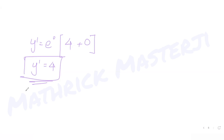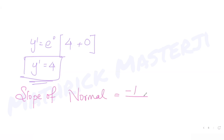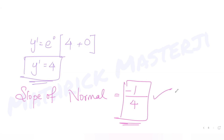Since the normal and tangent are perpendicular to each other, their slopes are negative reciprocals. So the slope of the normal to the curve is the negative reciprocal of the tangent slope, giving slope of normal = -1/4.